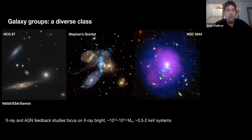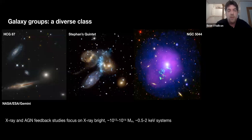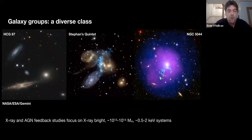It's worth remembering that groups are quite a diverse class of systems. On the smallest scale, systems like our own local group may only contain one or two medium to large spiral galaxies. Going up in mass, you get things like Hickson 87, with some galaxy merging but not much hot gas. Further up the mass scale is Stefan's Quintet, with multiple galaxies and some hot gas beginning to build. At the high mass end, things like NGC 5044 begin to look like miniature galaxy clusters — with a central dominant giant elliptical, and hot gas in a big halo filling the potential well. For feedback studies, we're primarily interested in X-ray bright systems with masses of 10^13 to 10^14 solar masses and X-ray temperatures in the range 0.5 to 2 keV.